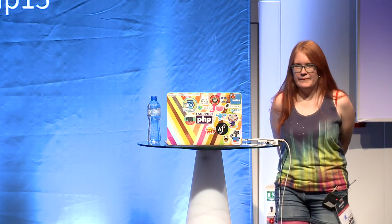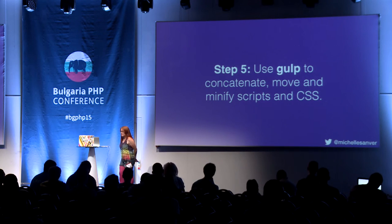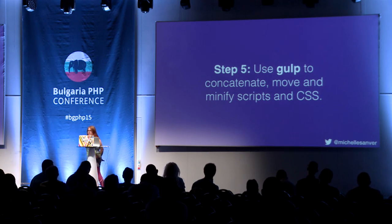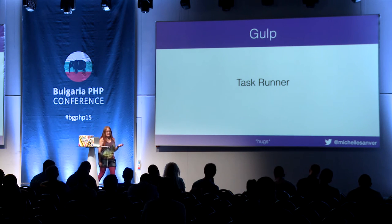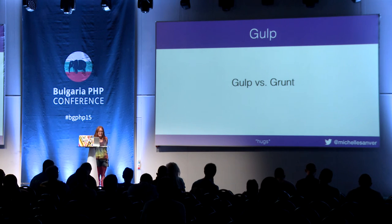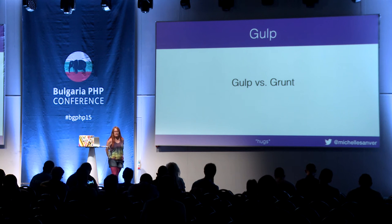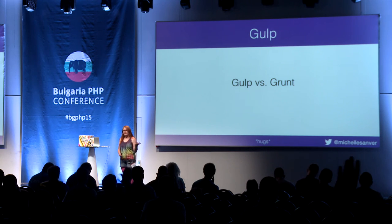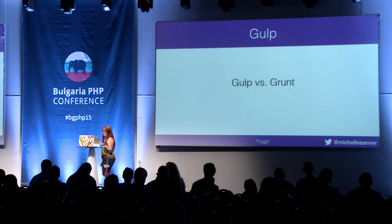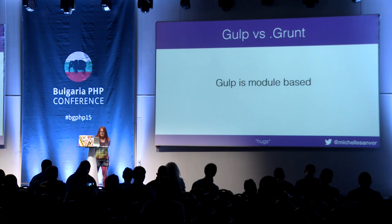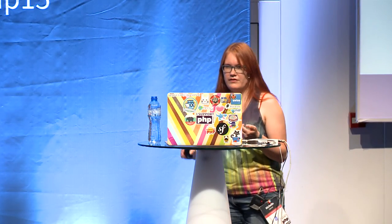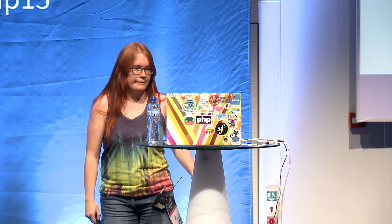That leads us to Gulp. You can use Gulp to concatenate, move, and minify scripts and CSS. And actually you can do anything in Gulp because Gulp is a task runner — almost anything, but that doesn't mean you should. A lot of you have probably heard of Grunt before. Grunt is config-based, but Gulp is module-based. In Grunt you have to define a config, while in Gulp you use individual modules — you just take what you need and use them. It's really nice.